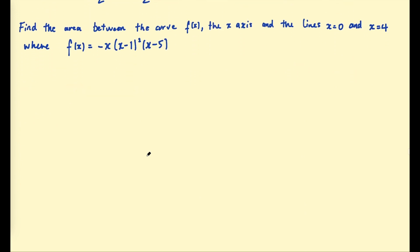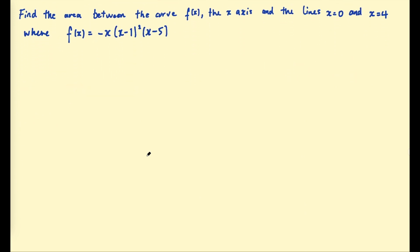Let's have a look at an example with a quartic. This says find the area, same as the last question. The bounds are now 0 to 4, and we have this function here, -x(x-1)²(x-5). So it's already factorized for us, so we just need to understand how to sketch a quartic, which you cover earlier on in the course.